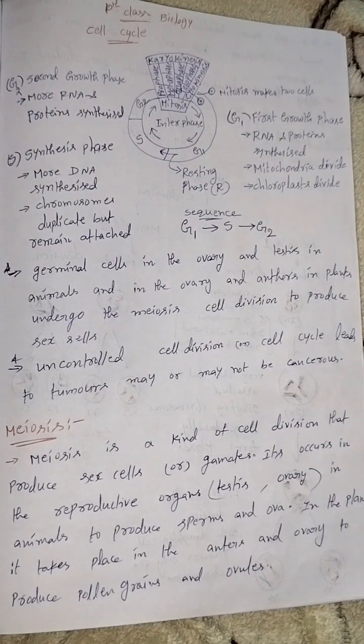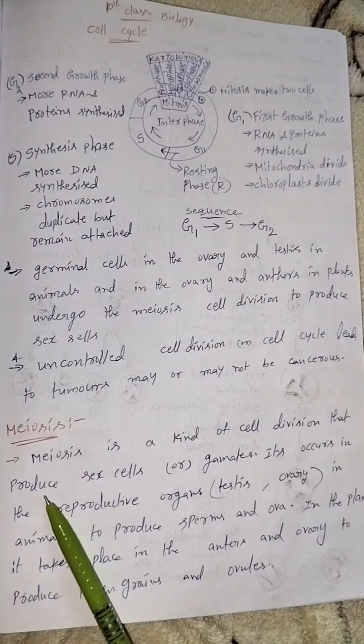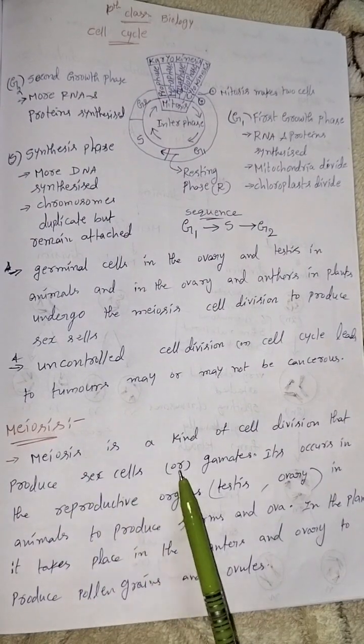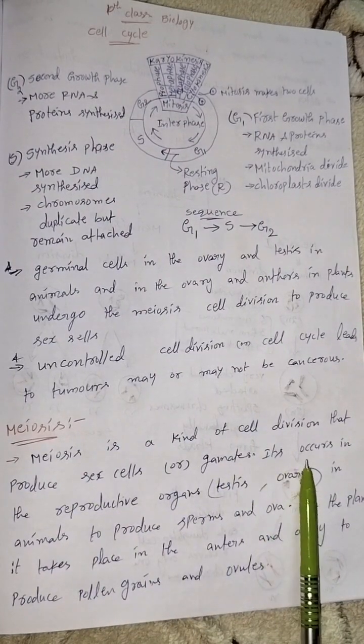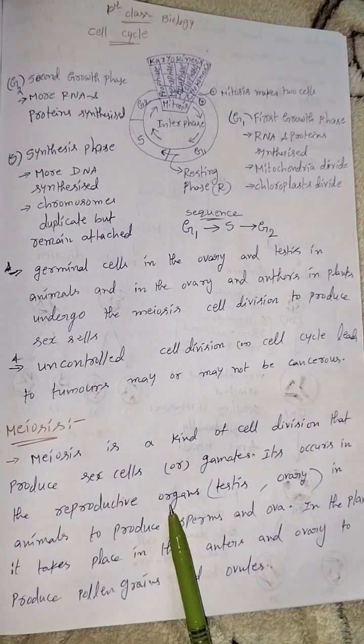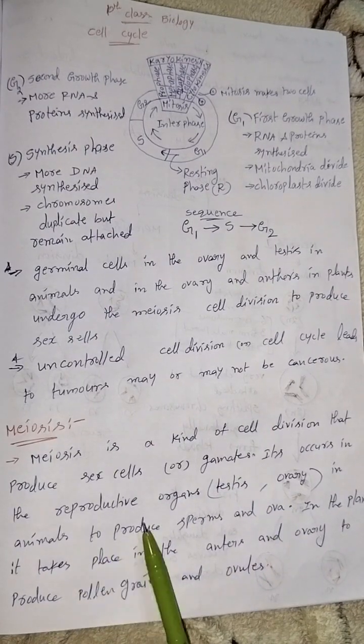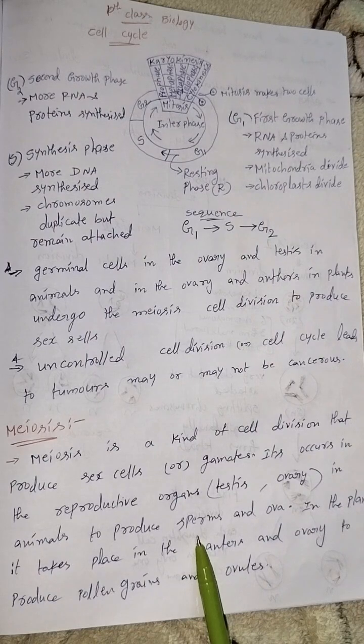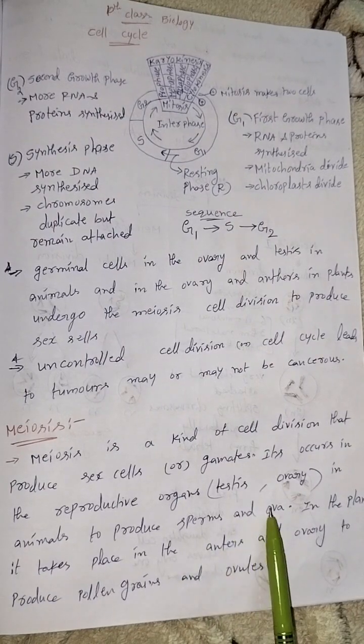Meiosis is a kind of cell division that mainly produces sex cells or gametes. It occurs in the reproductive organs: testis and ovary in animals to produce sperms in testis and eggs in ovary.